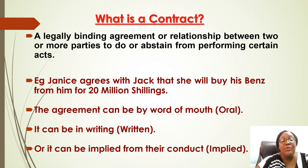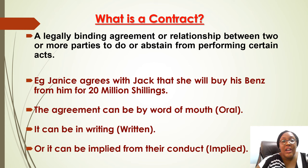This contract can be oral — you can just say it and not write it anywhere. Or it can be written — Janice and Jack write down what they've agreed and both sign it; that is a written contract. It can also be implied from conduct. Here, Janice gives her money to Jack and Jack gives the item to Janice — nothing is written, nothing is said, but from their conduct we understand that a purchase has taken place. That is an implied contract.